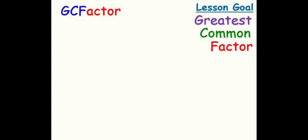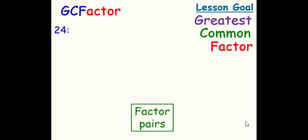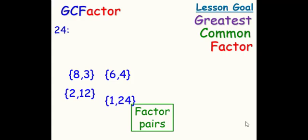Our lesson goal for today is we're gonna find the greatest common factor. So we're trying to find factors of 24, factor pairs. We're gonna think about two numbers that multiply to give us 24. So you might have said 8 times 3 or maybe 6 times 4, 2 times 12, or actually the easiest one would be 1 times 24. These are the four factor pairs of 24.